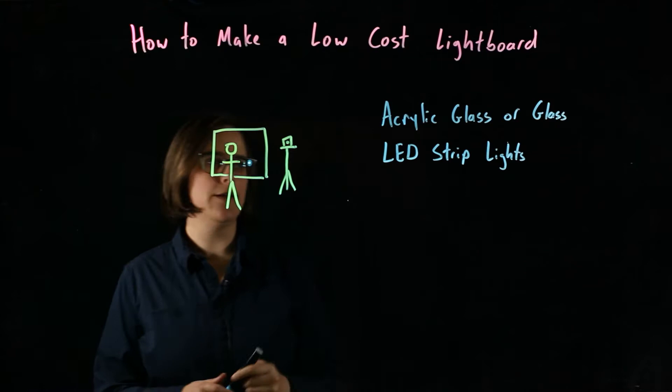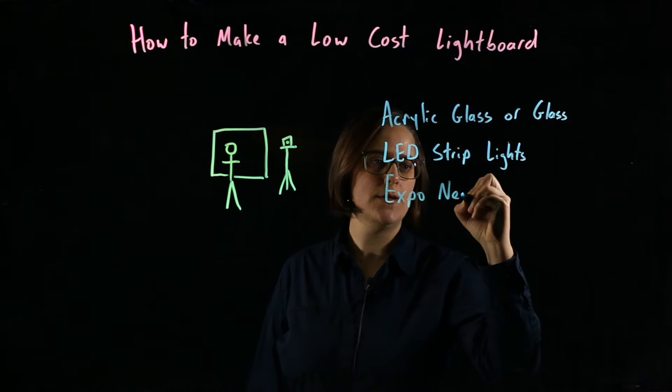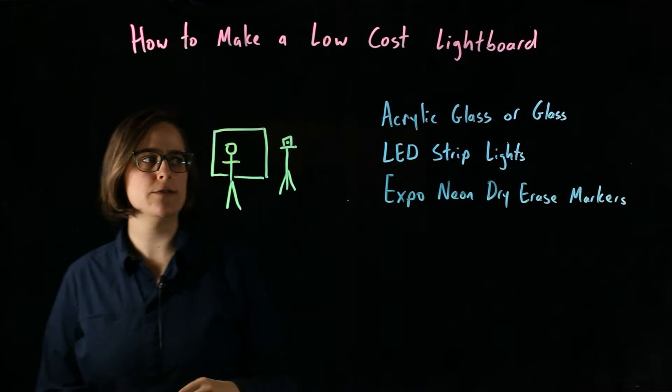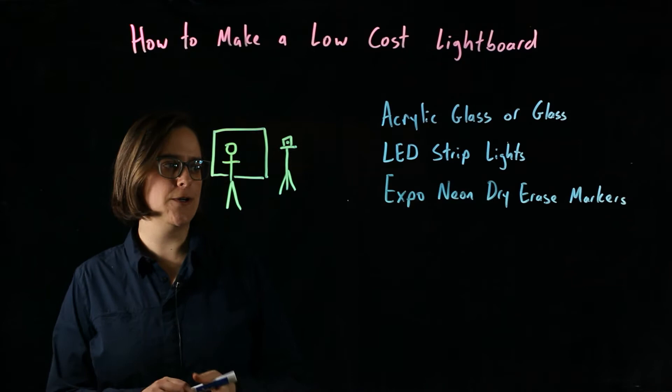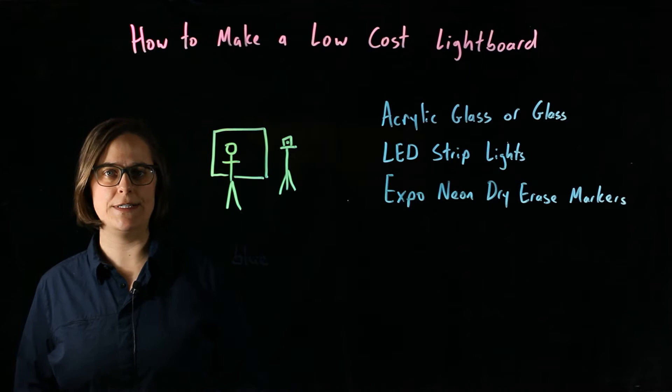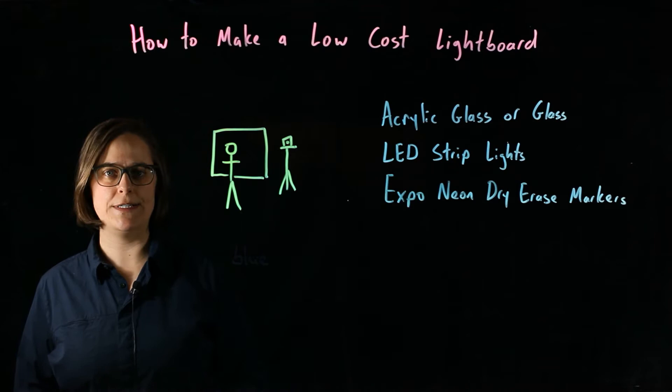So the markers that I'm using are the Expo Neon dry erase markers. Expo Neon dry erase markers. Sometimes they're called window markers. But if I use a normal blue dry erase marker it doesn't show up very well. So I'm writing the word blue with a normal blue dry erase marker. You do need neon dry erase markers for this to really show up and pop.